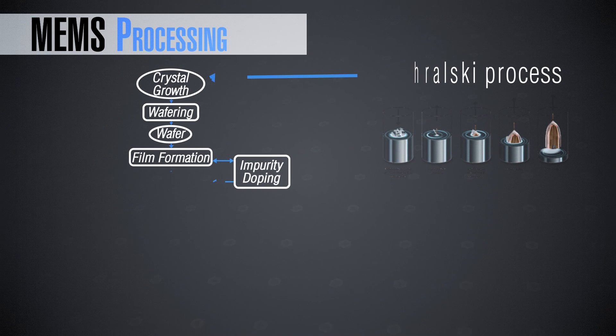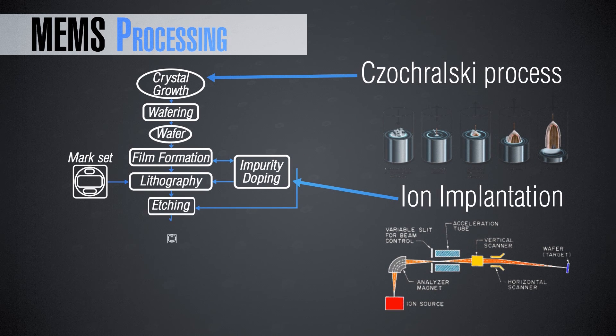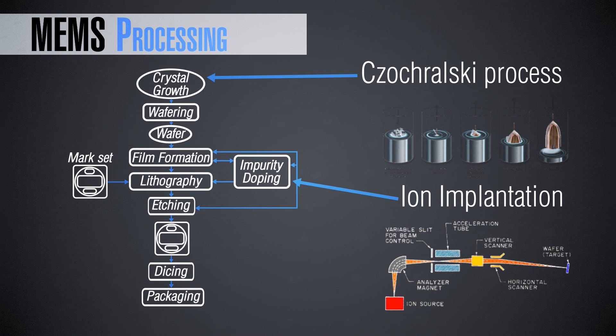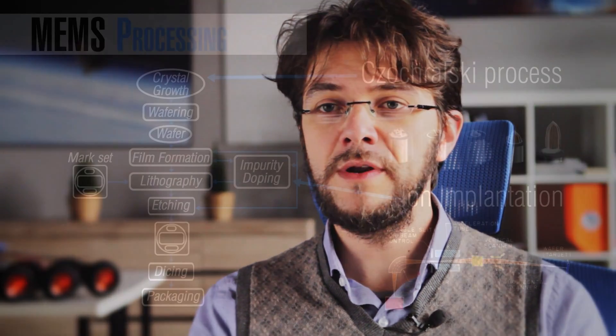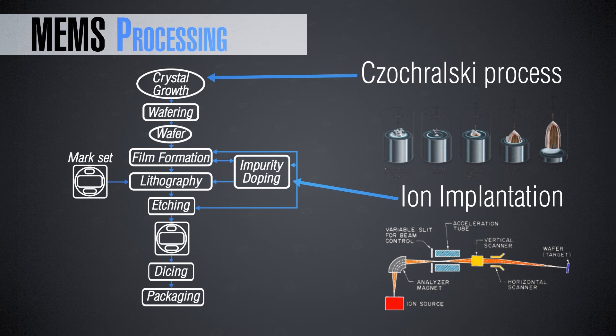The most popular process for the growth of single crystals is the Czochralski process, invented by a Polish scientist and engineer. It starts from a seed — a tiny single-crystalline portion of the same material you want to grow. You place this seed, connected to a rod, into a melting pot where the raw material is in liquid state. You then pull up the seed and slowly spin the molten liquid, and the atoms slowly add to the seeding system to realize a perfect monocrystalline structuration.